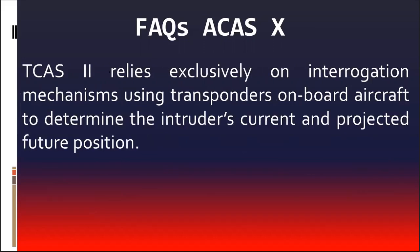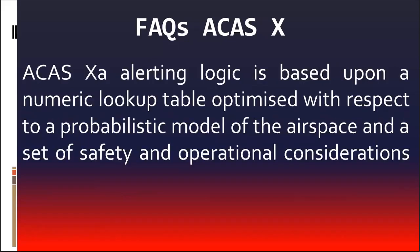TCAS II relies exclusively on interrogation mechanisms using transponders on board aircraft to determine the intruder's current and projected future position. Based on a fixed set of rules, the advisory logic issues alerts against a potential threat on the basis of time of closest approach and projected missed distance. Instead of using a set of hard-coded rules, ACAS-XA alerting logic is based upon a numeric lookup table optimized with respect to a probabilistic model of the airspace and a set of safety and operational considerations.